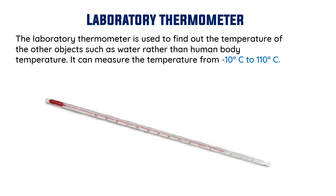The next thermometer is the laboratory thermometer. Different types of thermometers are used for different purposes: the clinical thermometer is used only to measure human body temperature, while the laboratory thermometer is used to find the temperature of other objects such as water and chemicals in a lab. The range of the laboratory thermometer is from minus 10 degrees Celsius to 110 degrees Celsius.